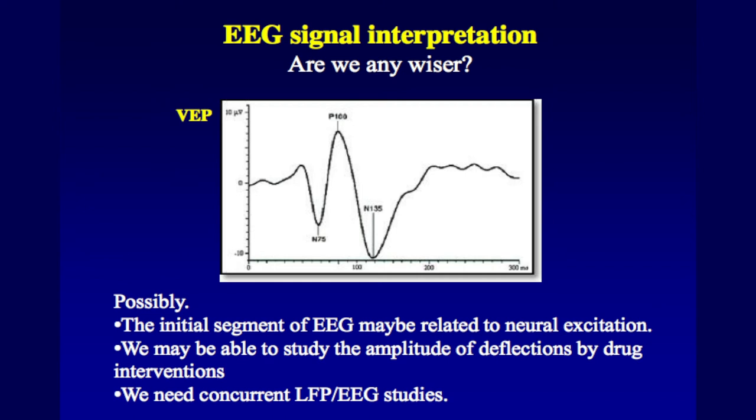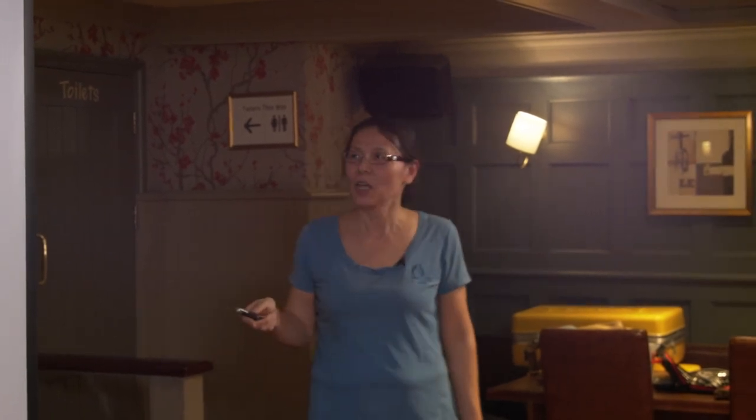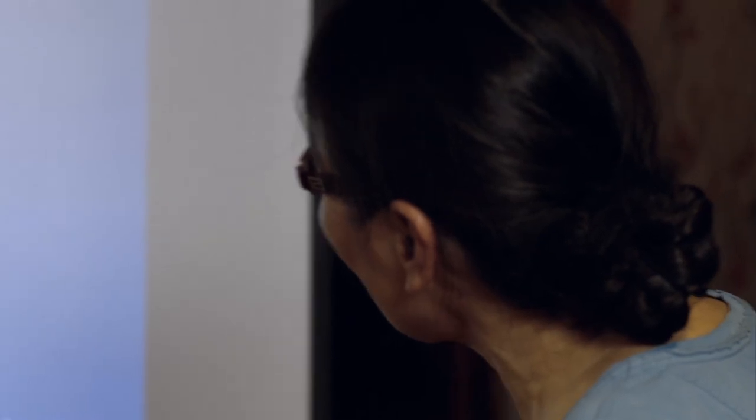We're still doing experiments - we've collected about eight datasets and are going to write it up. The question is: from this animal study, are we any wiser in interpreting EEG signals? I think probably a little bit wiser at this stage, and hopefully we can design more experiments to tease out all the other deflections. I will be very cautious because we haven't done the concurrent EEG and local field potential recording yet - that is a crucial next step, and that's what we're going to do next. Once we've done that, we can probably say for certain.